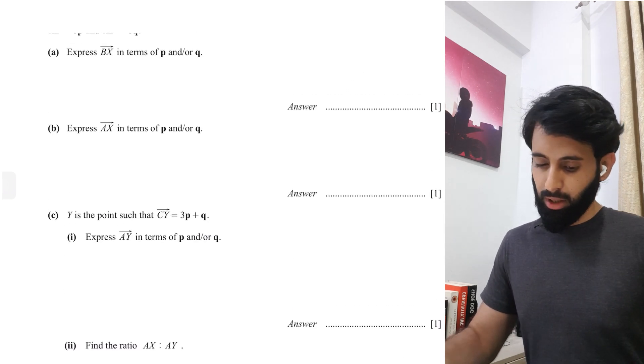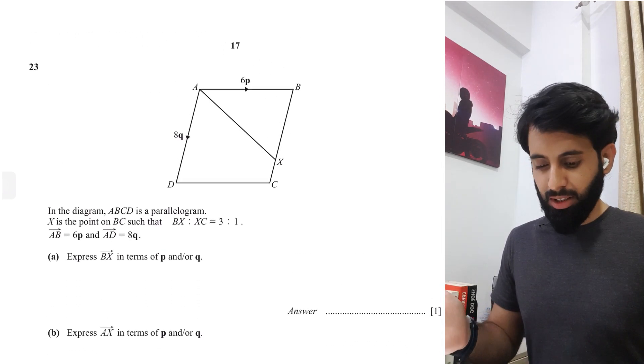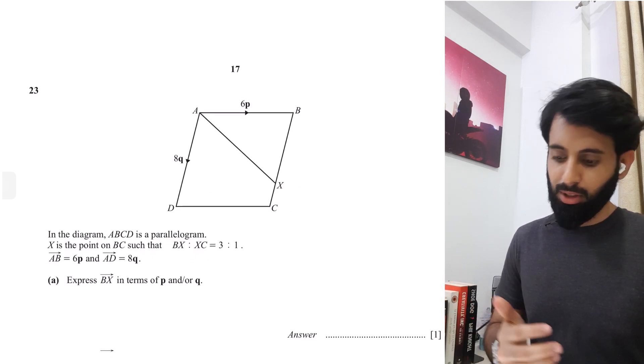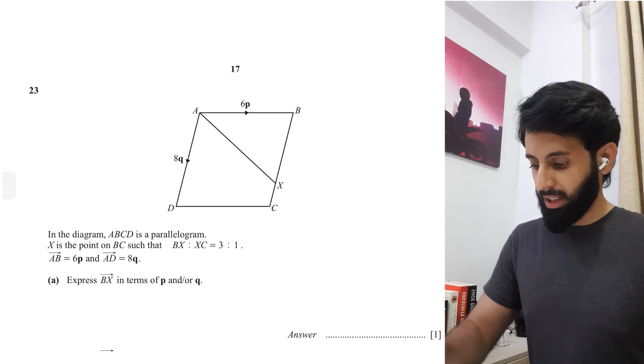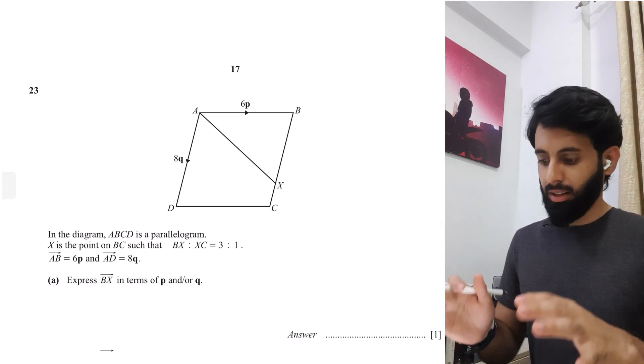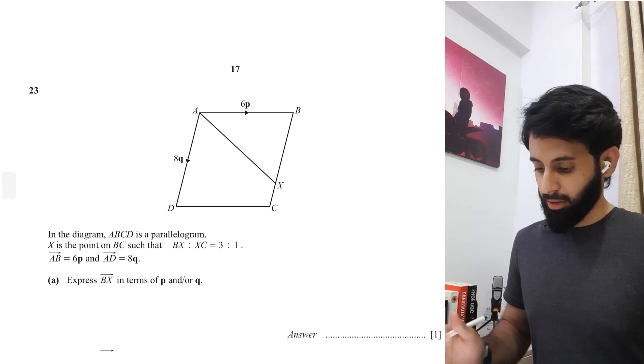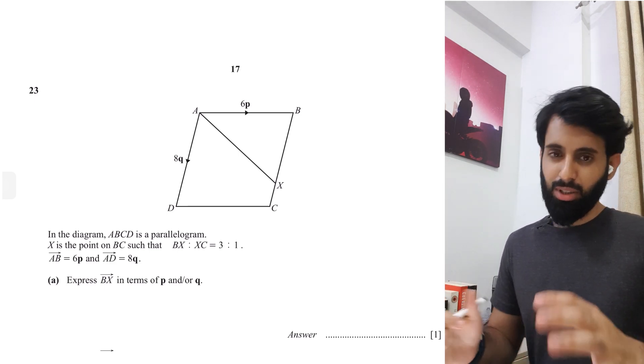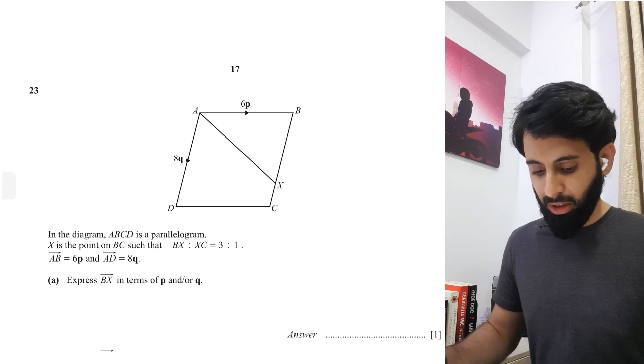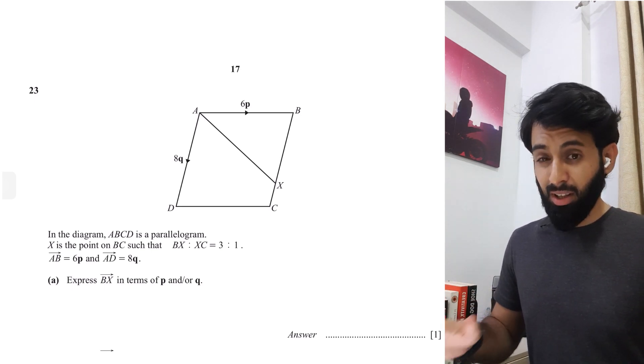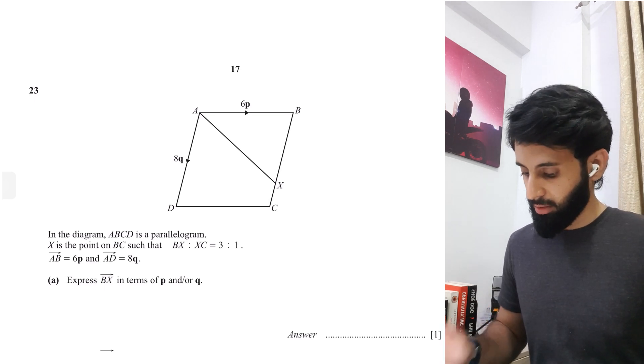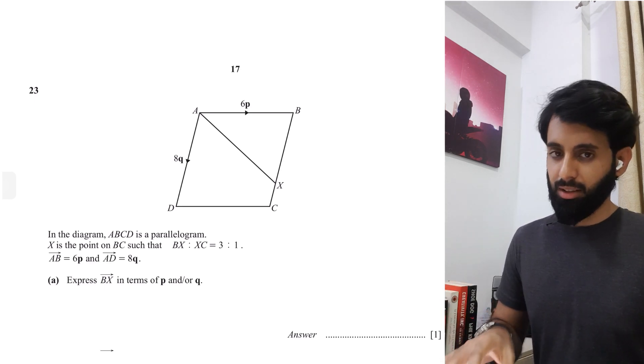Although it's paper one, the whole idea is to understand the concept since vectors can also come in paper two. I'm going to explain each and every part so you can understand the concept. The reason I've chosen this question is because it has one of these ratio parts which I've noticed that a lot of students tend to struggle with. Hopefully this will make things easier.